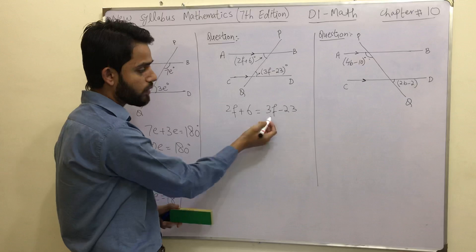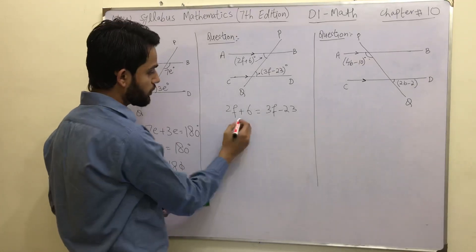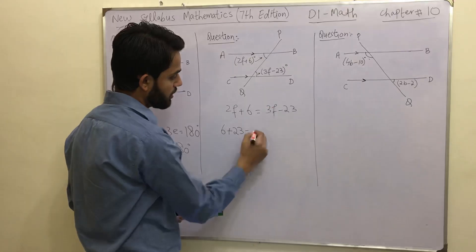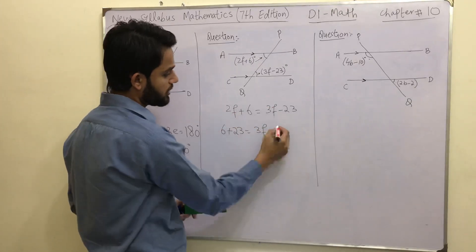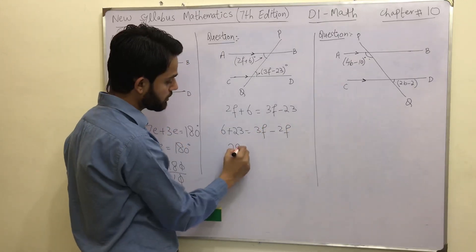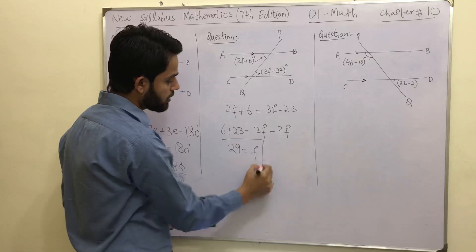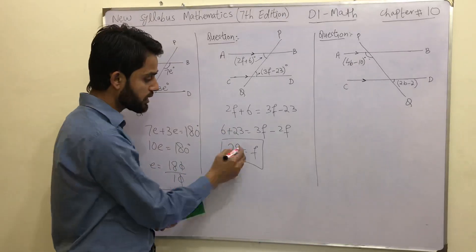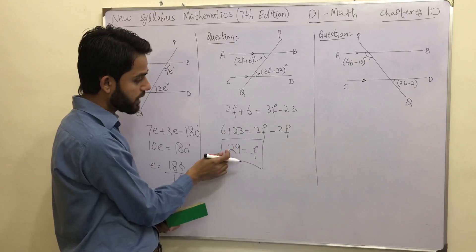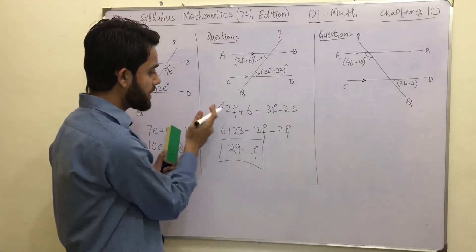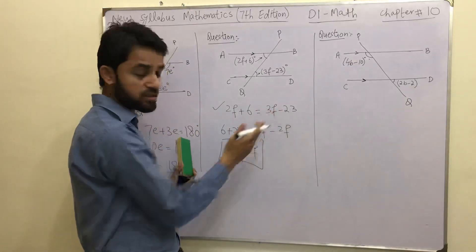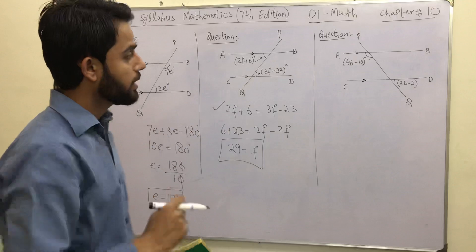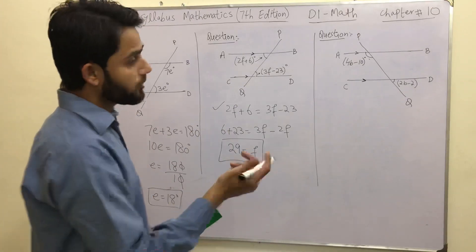We have 2F on one side and 3F on the other. Shift 23 across: 6 + 23. Then shift 2F across: 3F − 2F = F. So 23 + 6 = 29, giving F = 29 degrees. You can cross-check by plugging F = 29 back into both expressions and verifying that the left-hand side equals the right-hand side.